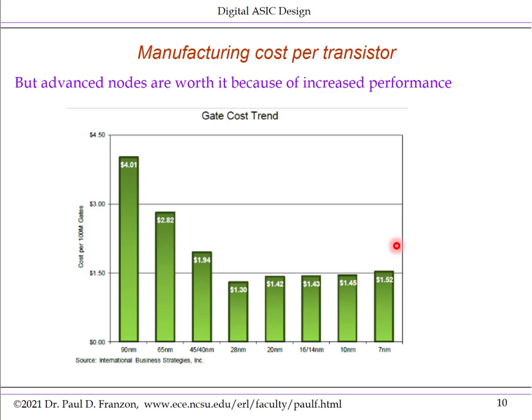The cost per transistor stopped improving at the 28nm node, at least according to this graph from IBM. This shows the cost per 100 million gates — each gate is in the microcent range. There were dramatic decreases in cost per gate until the 28nm node, followed by a slow increase. We're still increasing the number of transistors per wafer or per chip in more advanced nodes, but the cost of fabrication is going up at a much faster rate than transistors per area, so the cost per transistor is going up slowly.